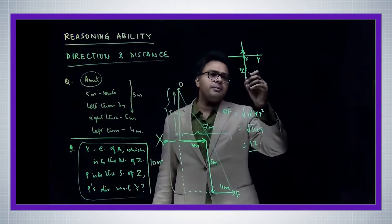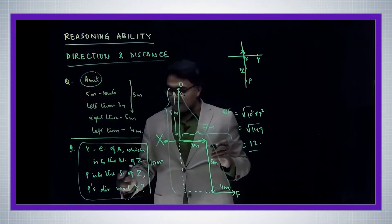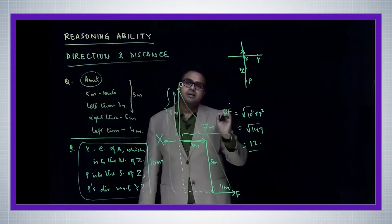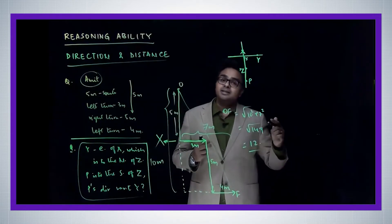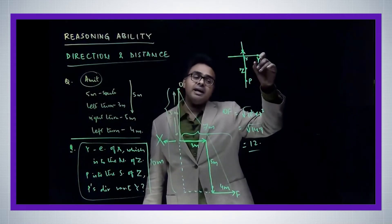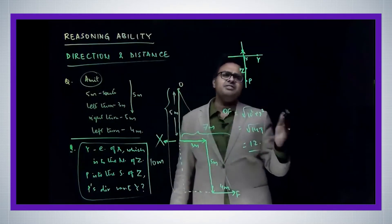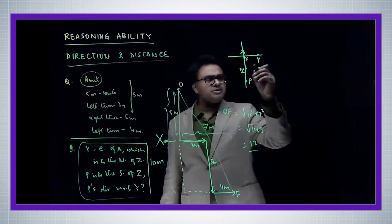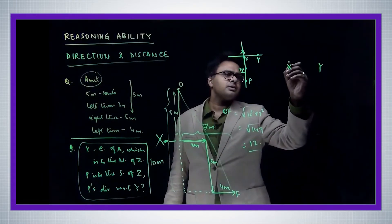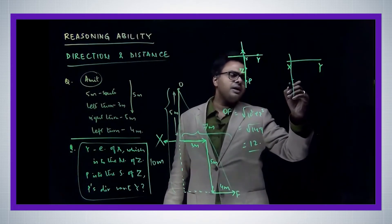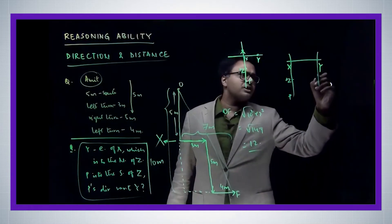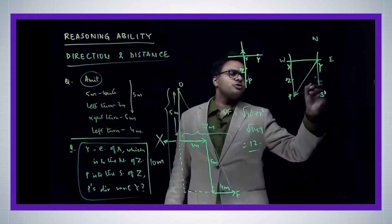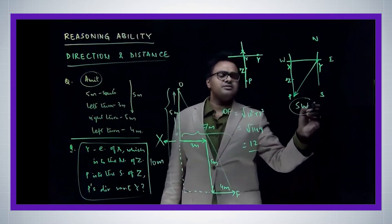P is to the south of Z, so P is further south of Z. Now we need to find P's direction with respect to Y. Shift your focus to point Y as the origin. With the whole diagram in place — X and Y at the top, Z below, P further south — and standard direction axes at Y: north, south, east, west, we can see which direction P lies from Y.